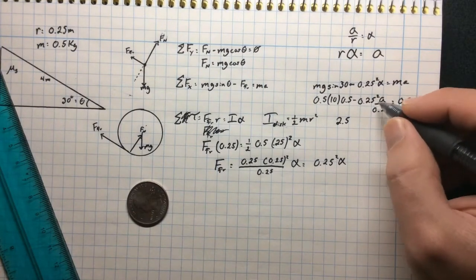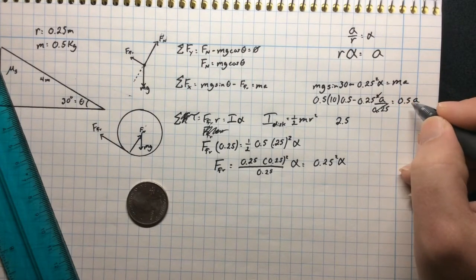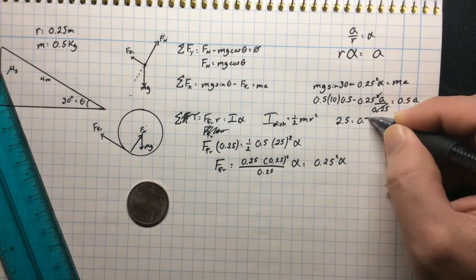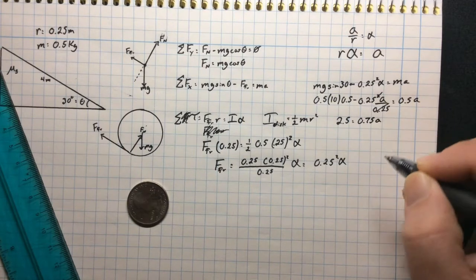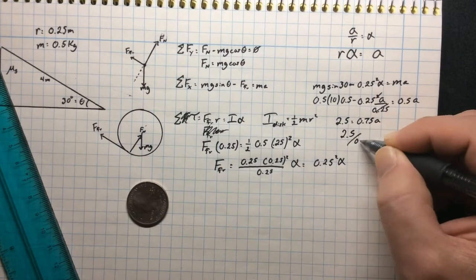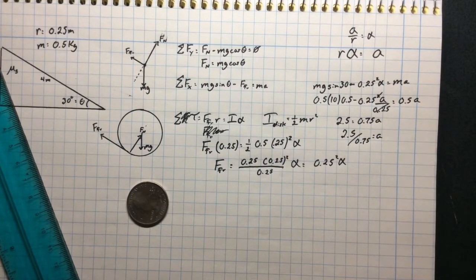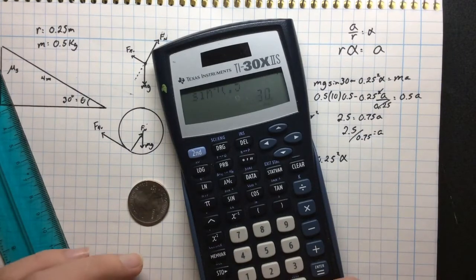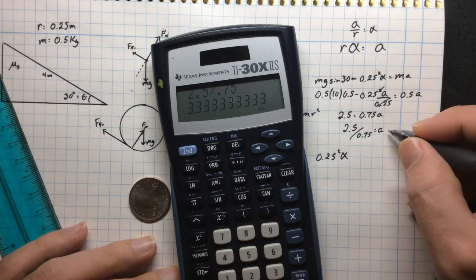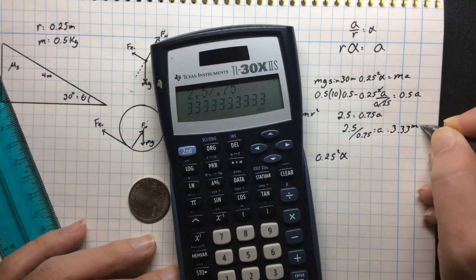So here we have 0.25 squared times alpha. That is going to be the force friction. We'll put that up here. MG times the sine of theta, which was 30. Start to put numbers in slowly. Minus our force friction which is now 0.25 squared alpha is equal to MA. Let's go ahead and turn the alpha into A. Angular acceleration is equal to linear acceleration. If we're talking about spinning about the edge there. And so if we are accelerating about the edge, the way we turn angular acceleration into the actual linear acceleration of the object would be just to multiply it by R. And so we would just take R and multiply alpha by R. Or the other way around would be to say that A divided by R is equal to alpha.